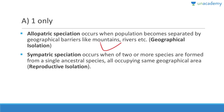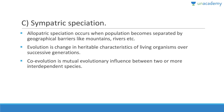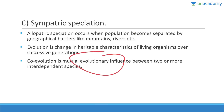Sympatric speciation occurs when two or more species are formed from a single ancestral species, all occupying the same geographical area but not reproductively compatible. Evolution is a change in heritable characteristics of living organisms over successive generations. Co-evolution is the mutual evolutionary influence between two or more interdependent species.